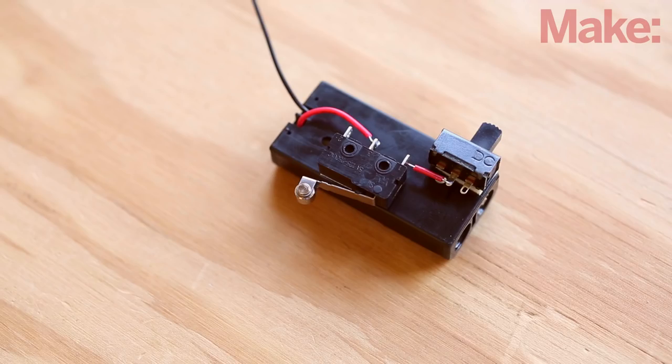Cut, strip, and solder the red battery pack lead to connect the two switches in series. Use the leftover wire to make two leads attached to the master switch's remaining terminal.